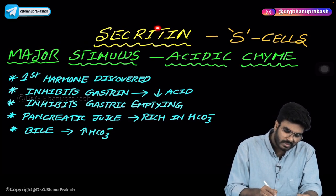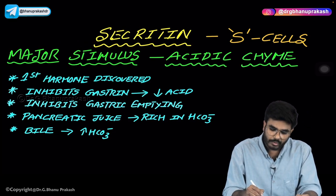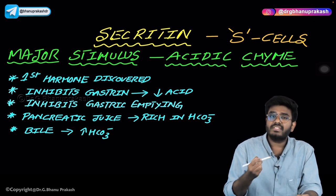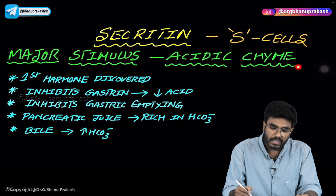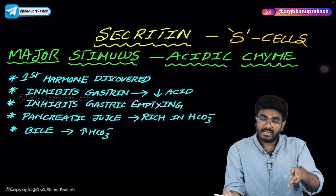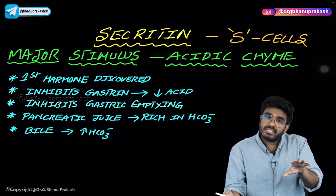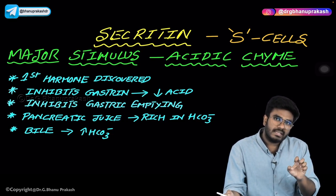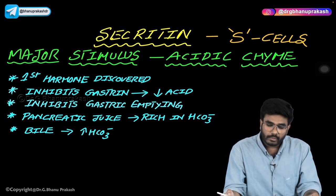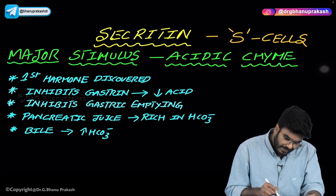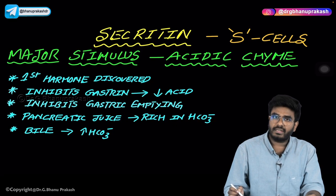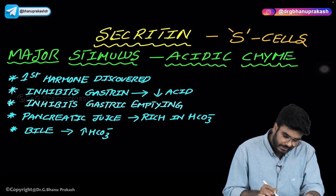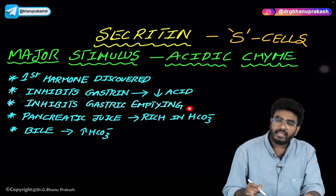Now let's discuss secretin. Secretin comes from S cells in the duodenum. The major stimulus for secretin release is acidic chyme. Secretin is nature's antacid — whenever acidic chyme enters the duodenum, duodenal S cells recognize the acid and release secretin. Secretin then inhibits the release of gastrin, decreasing acid production, and also inhibits gastric emptying.